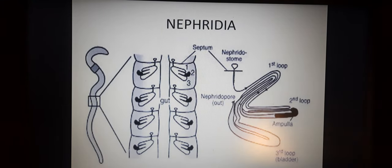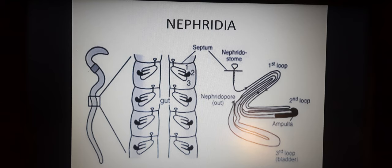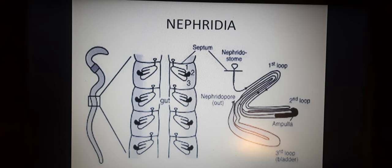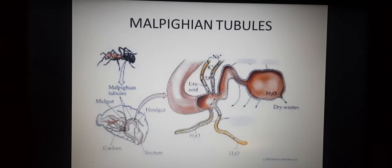Next is nephridia, present in annelids. Annelids are worms whose whole body is made up of a number of rings — examples are earthworm and leech. Each segment possesses nephridia. In annelids, nephridia help in the removal of nitrogenous waste products and osmoregulation.